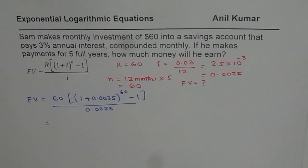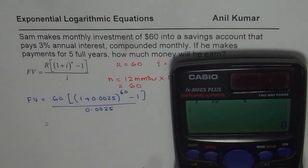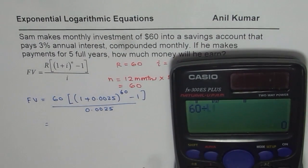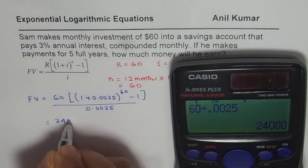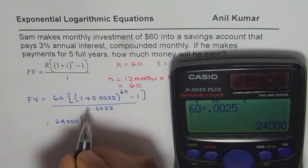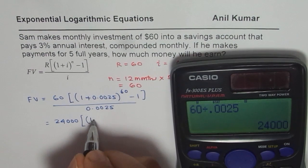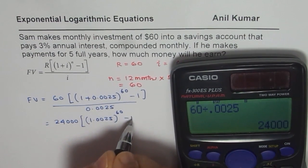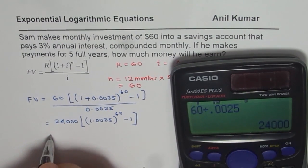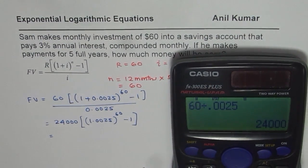It is better to divide 60 by 0.0025 first. So we will do 60 divided by 0.0025, and we get 24,000 times. Let us add this, so we get 1.0025 to the power of 60 minus 1.